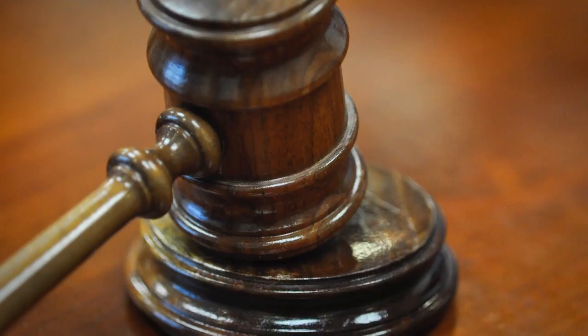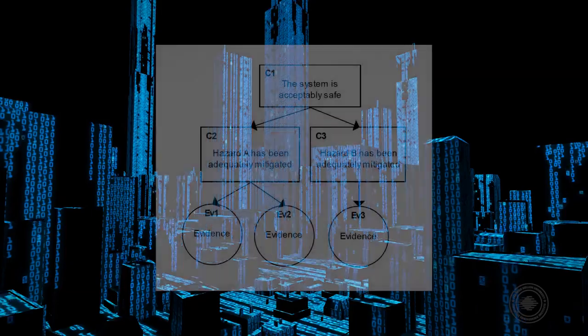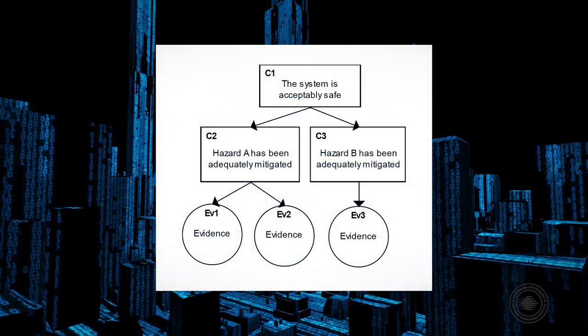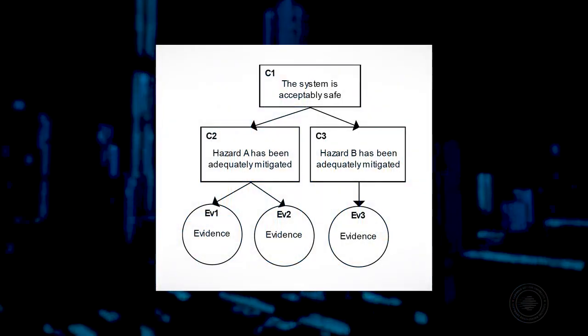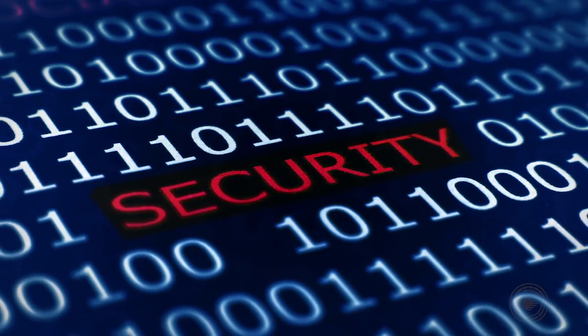Confidence maps are based on the assurance case, an argument similar to a legal case that a system satisfies a property of interest, such as safety or security. Assurance cases are sometimes required before deploying safety-critical systems.